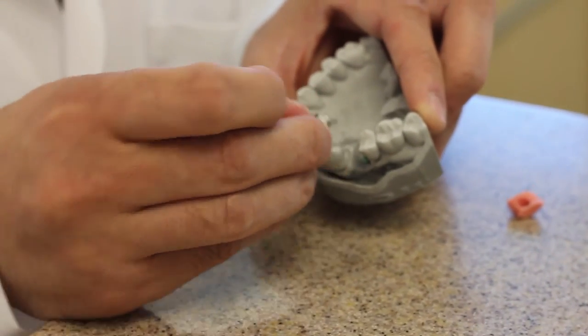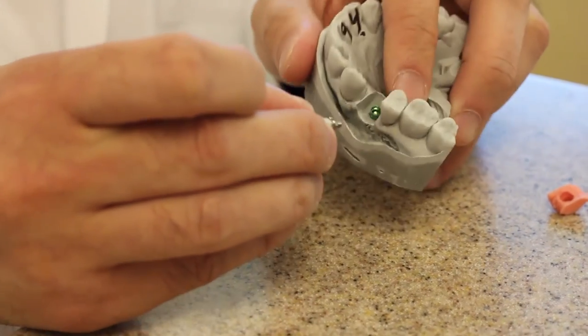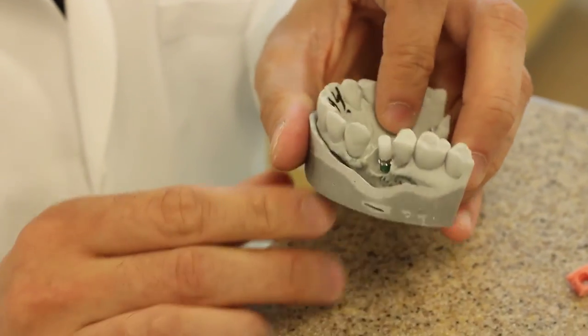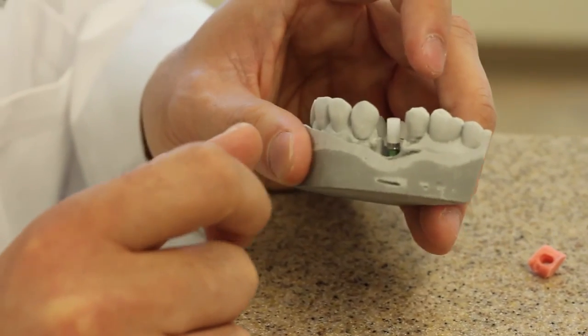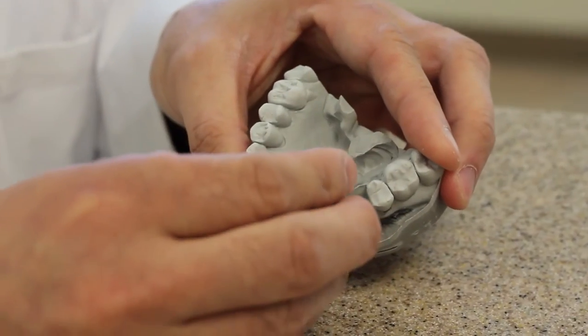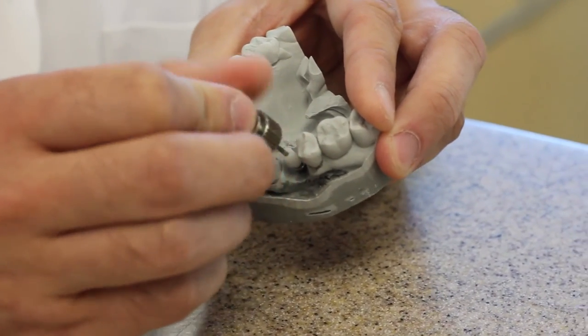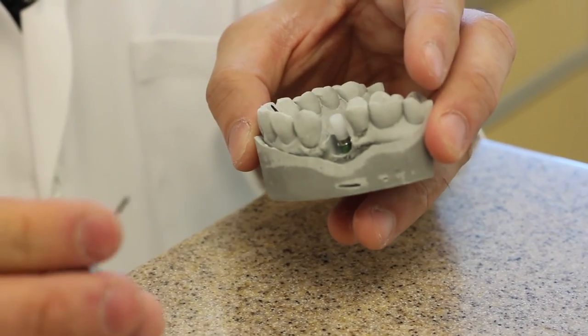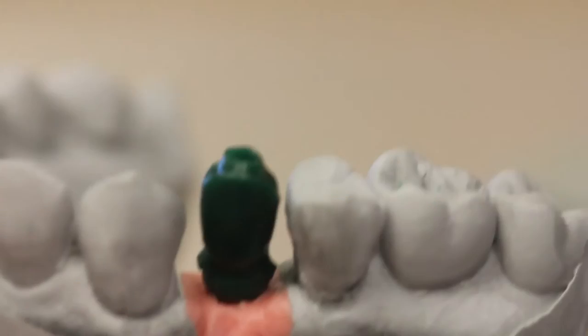What's being seated onto the analog now is what we call a UCLA abutment. It's got a plastic sleeve on it that we can wax up to the contour of the crown that we would like to fabricate. Tighten that and see that it is seated all the way. It's important, otherwise our occlusion will be incorrect if our crown is fabricated off of an unseated or not fully seated UCLA. You'll give that to the lab.